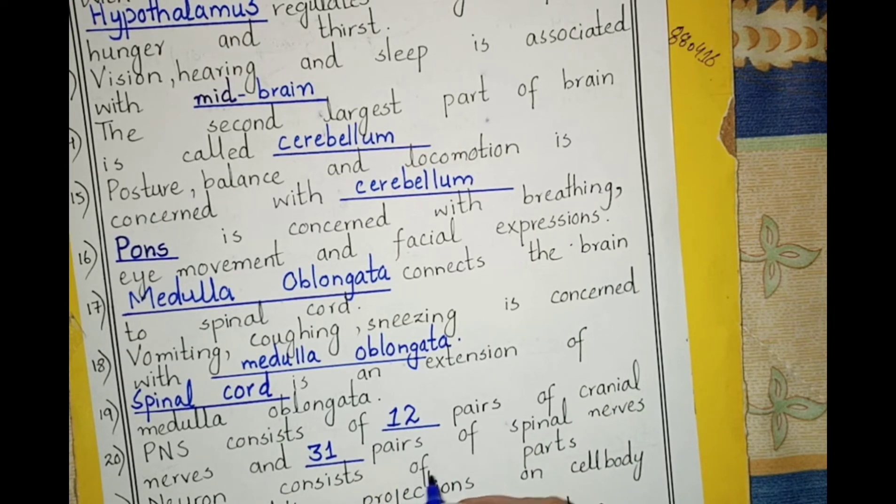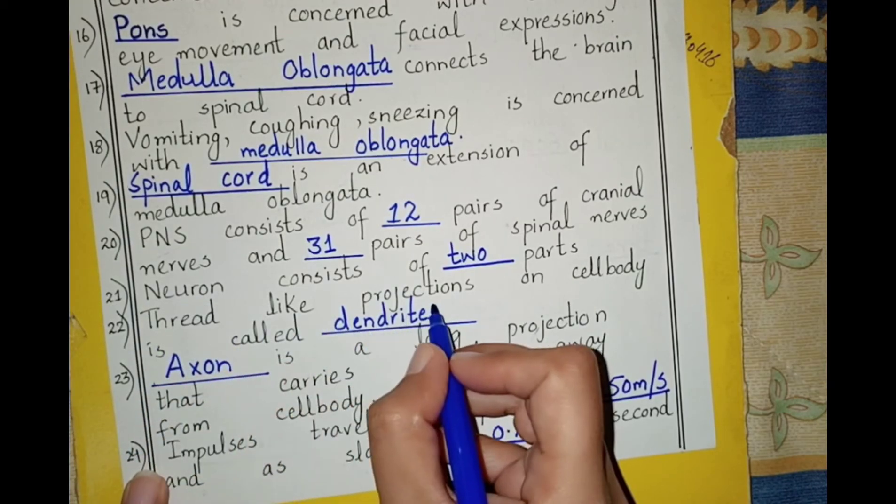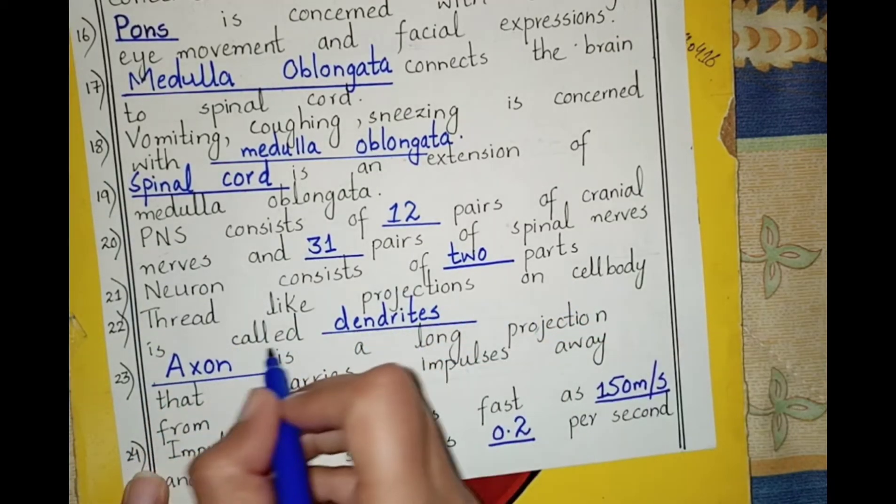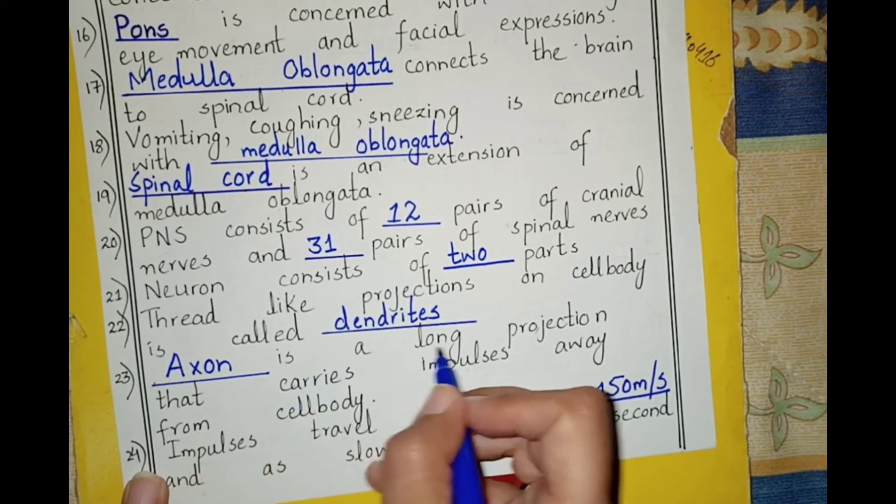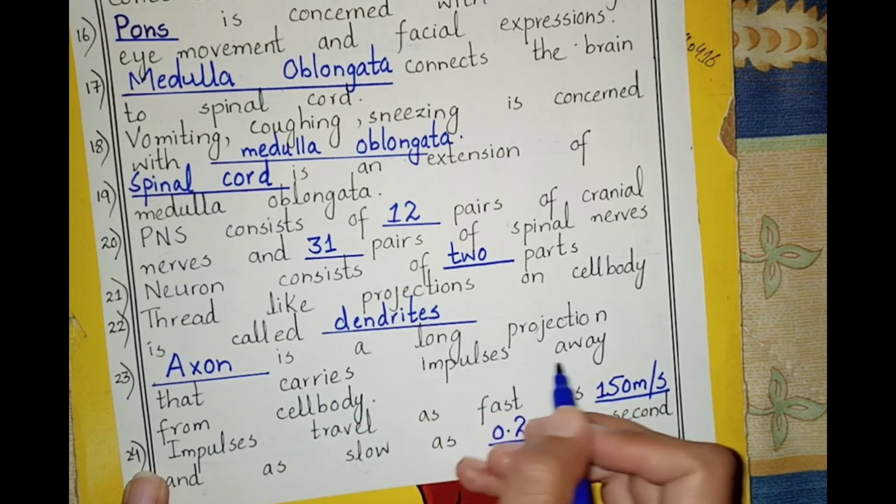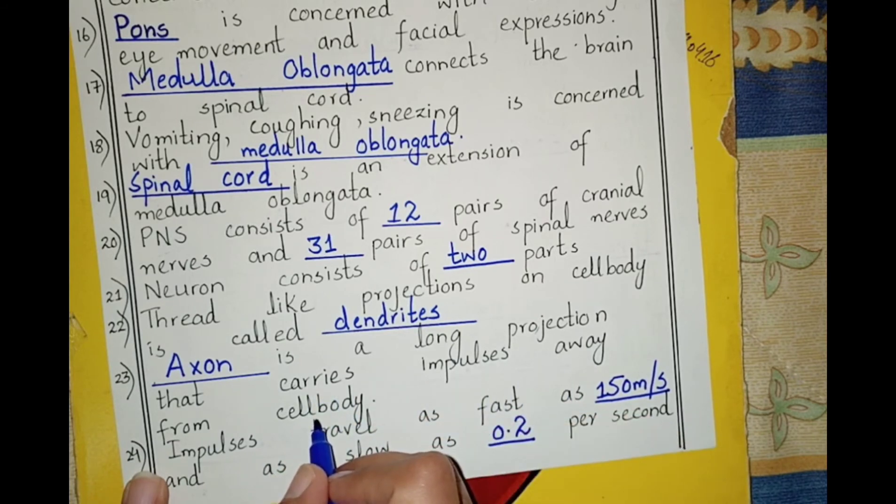A neuron consists of how many parts? Two parts: cell body and axon. The thread-like projections on the cell body are called dendrites.